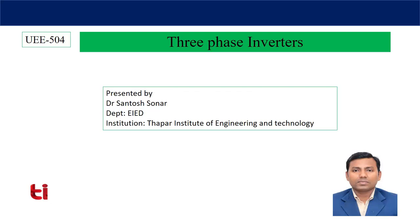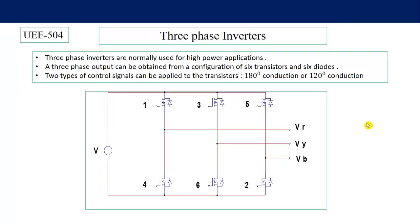In 3-phase inverters, 6 switches and 6 diodes are used. Diodes are generally not required if the load is resistive, but if the load is inductive, diodes are very important; otherwise the output voltage waveform will change. 3-phase inverters are normally used for high power applications. The output voltage can be obtained using six transistors — MOSFET, IGBT, or thyristor for very high power — and six anti-parallel diodes are required if the load is inductive.